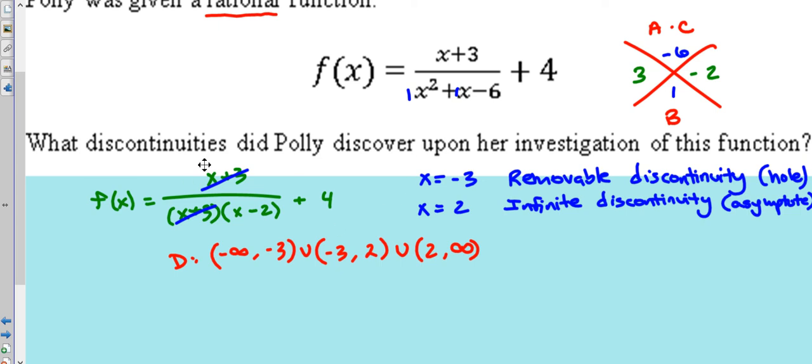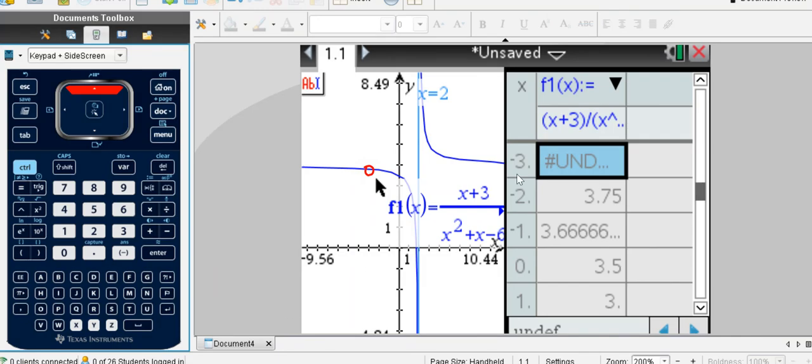And we also, one other thing that the problem did not ask for but could be asked on the test, is for a horizontal asymptote. And we could look here and test. It looks like it's at y equals 1, 2, 3, 4. If you're not for sure,